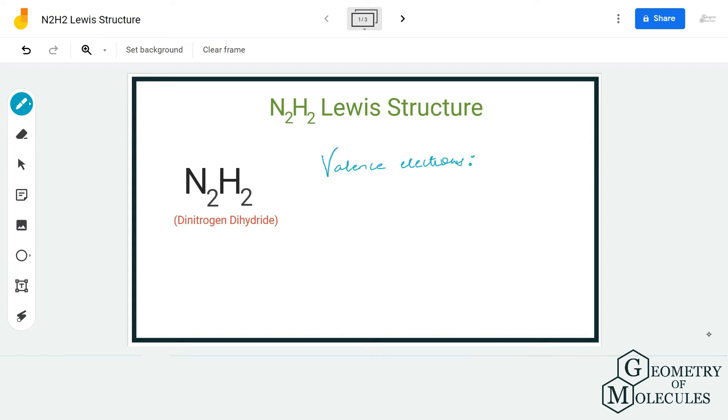Hi guys, welcome back to our channel. In today's video, we are going to help you determine the Lewis structure of N2H2 molecule. It has a chemical name of dinitrogen dihydride. To determine its Lewis structure, we are first going to look at the total number of valence electrons.